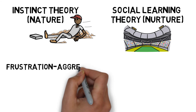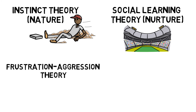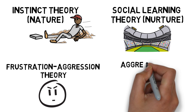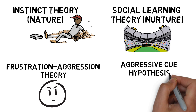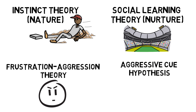Frustration-aggression theory suggests that aggression is born out of frustration as the athlete is being blocked from achieving a goal, causing a drive to be aggressive towards the source of the frustration. However, frustration does not always lead to aggression, and not all aggression is caused by frustration — it can be learnt or situational. The aggressive cue hypothesis suggests that frustration will cause arousal levels to increase, but aggression will only occur if there are socially acceptable cues present, such as the referee not watching or a coach reinforcing that type of behaviour.